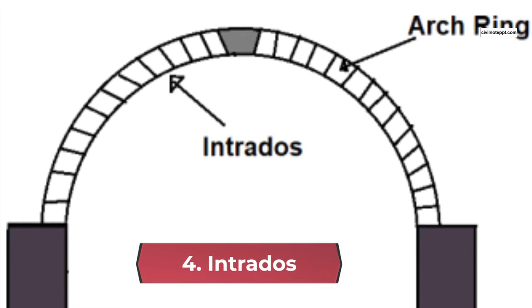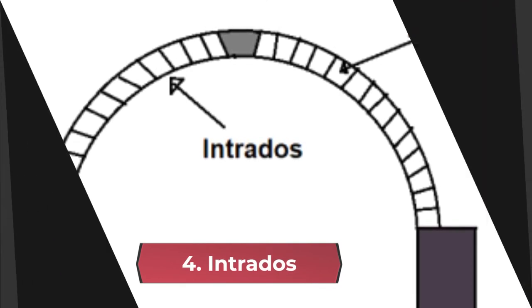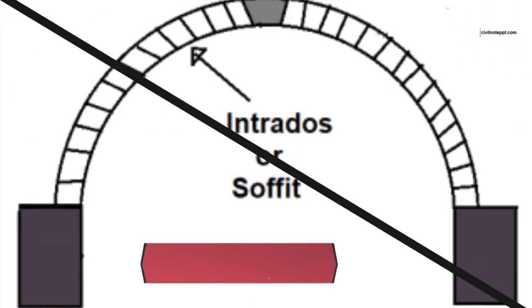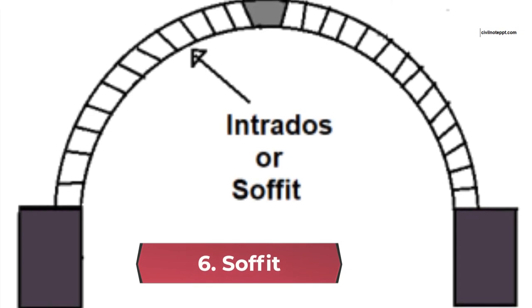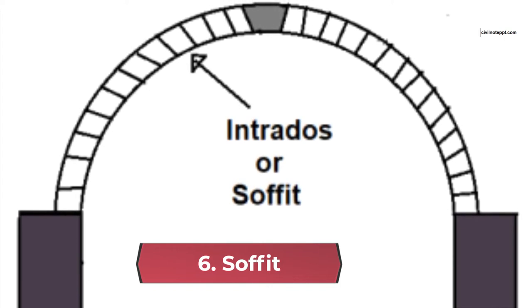4. Intrados. This is the inner curved surface of the arch. 5. Extrados. This is the outer curved surface of the arch. It is also known as the back of the arch ring. 6. Soffit. The soffit is the bottom surface of the arch. Intrados and soffit terms are used to indicate the same thing.